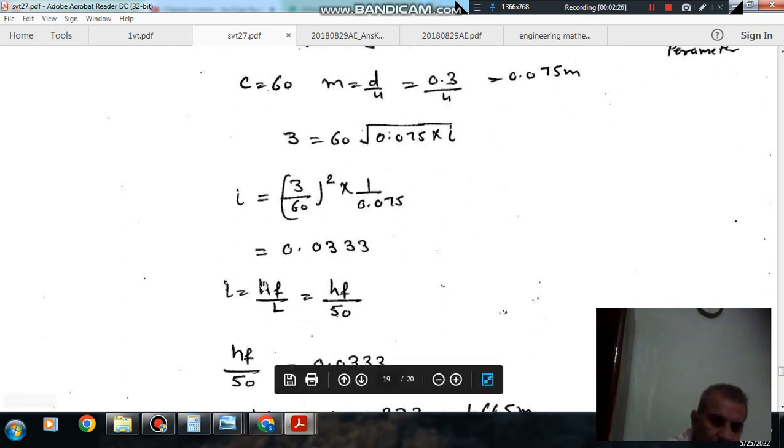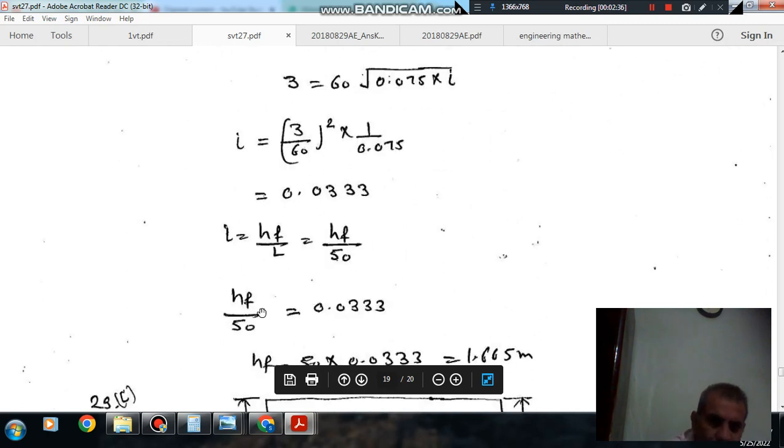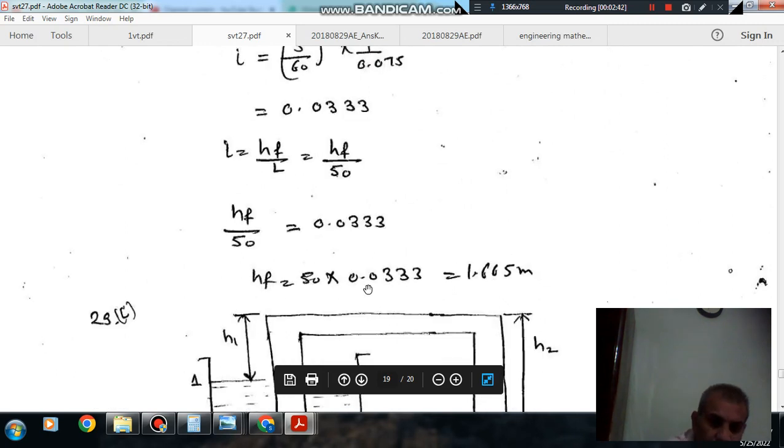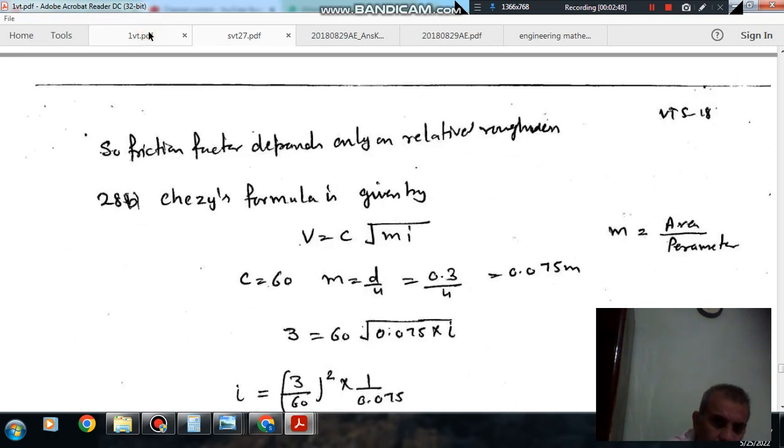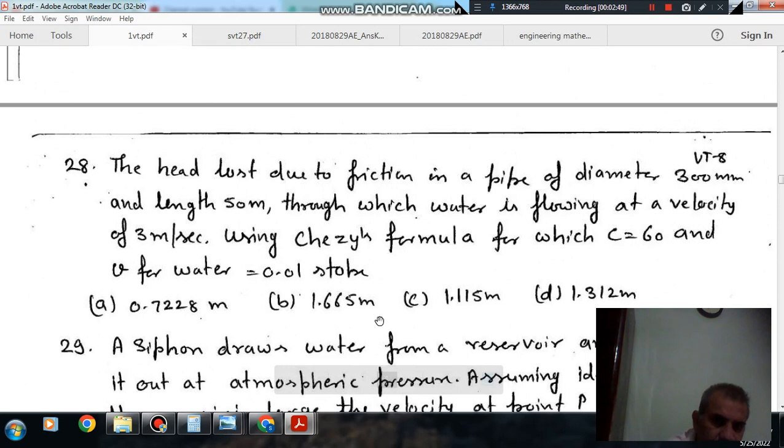And i is the head loss by length of pipe. So length of pipe is given as 50. This is called slope also. So HF is 0.033 times 50. And HF is equal to 1.665 m. So answer is 1.665 m. Option B is the right answer.